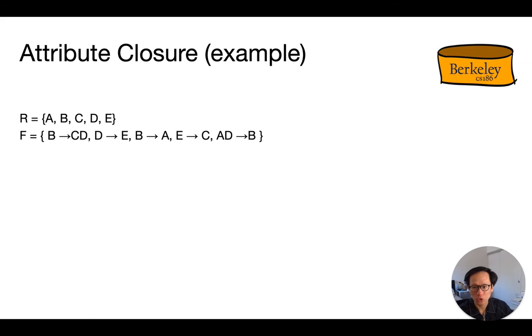For our first question, let's ask if B determines E is in F+. Well, let's look at B+, the attribute closure of B. Obviously, B is in it trivially. And C and D are both in there as well because of the rule B determines CD. So we've got B, C and D. Now iterating again, once we know that D is in there, we also know that E is also in there as well. And then we're done. So, yes. Indeed, B determines E is in F+ and we found that pretty quickly.